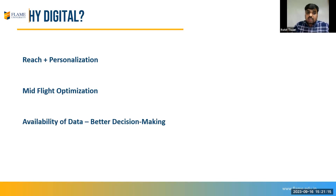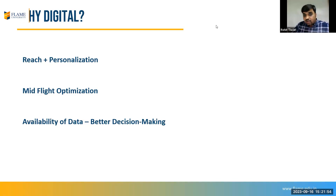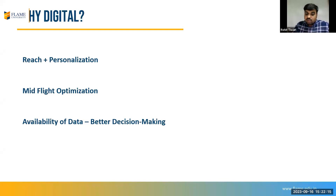Availability of data is another key advantage. With so much data available, we can make better decisions — understanding what kind of users are liking your ad, who is converting, and even whether someone who clicked a search or display ad is going in-store and converting. In your dashboard, you can see campaign-wise data on which keywords are working and increase or decrease budgets accordingly.